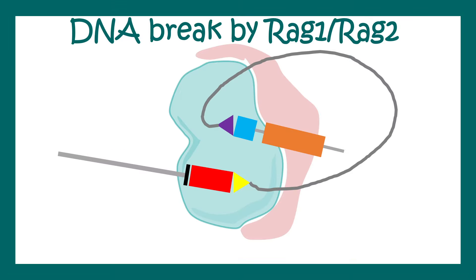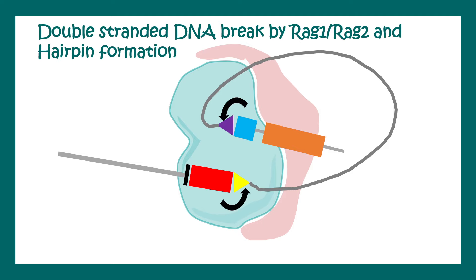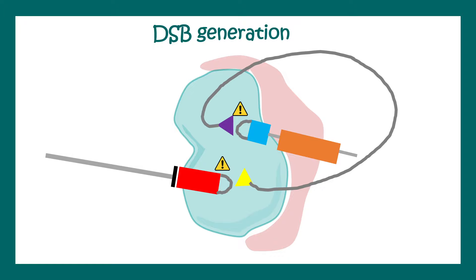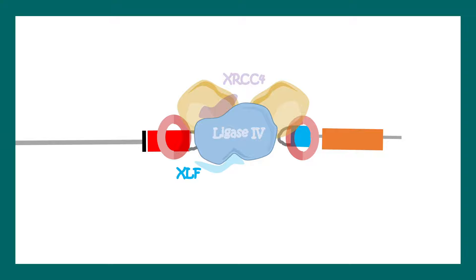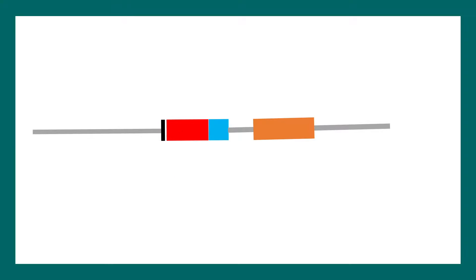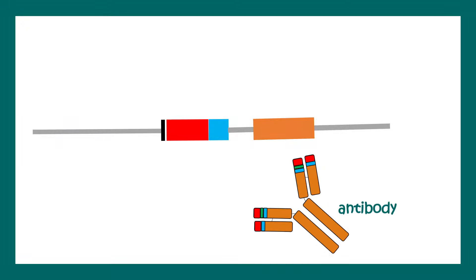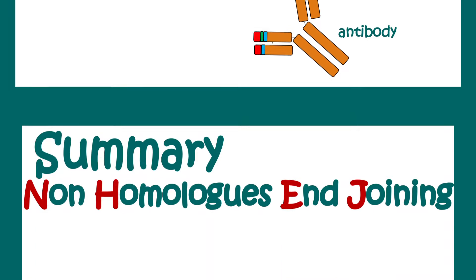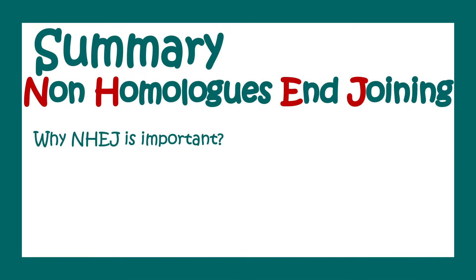Specific recombinases such as RAG1 and RAG2 cleave the first strand and then lead to second strand cleavage, generating a double-strand DNA break. This double-strand DNA break has to be fixed, and NHEJ is the mechanism by which it is repaired, allowing the antibody chains to be generated. So the variable region of the antibody requires VDJ recombination, which in turn requires the NHEJ mechanism.